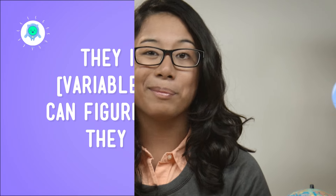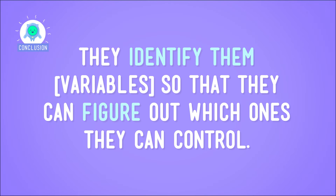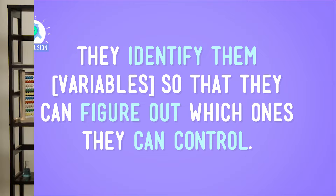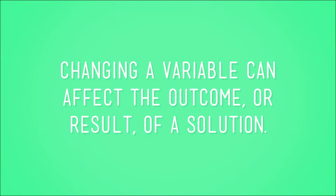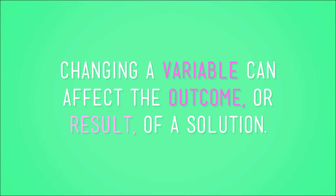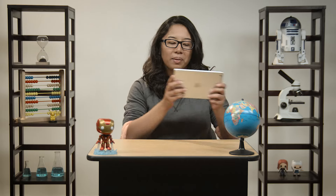So engineers don't just identify variables for fun — although it definitely can be. They identify them so they can figure out which ones they can control: either change them or keep them the same. And that's important to know because changing a variable can affect the outcome, or result, of a solution. So engineers change only one variable at a time when they test a solution, so they're sure of the connection between the variable and the outcome. Now it's back to my game — I'm coming for you, marshmallows.